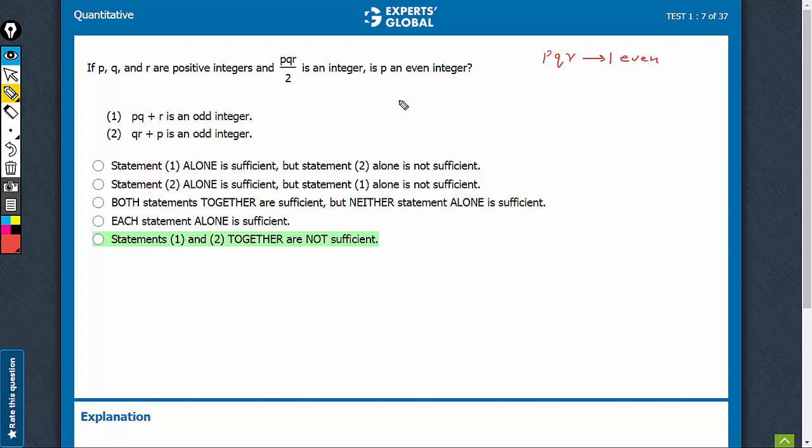With this groundwork, let's look at the statements. PQ plus R is odd. This only tells us that one of them is even, either PQ is even and R is odd, or PQ is odd and R is even. So P could be, of course, even as well as odd. So statement 1 is not sufficient.